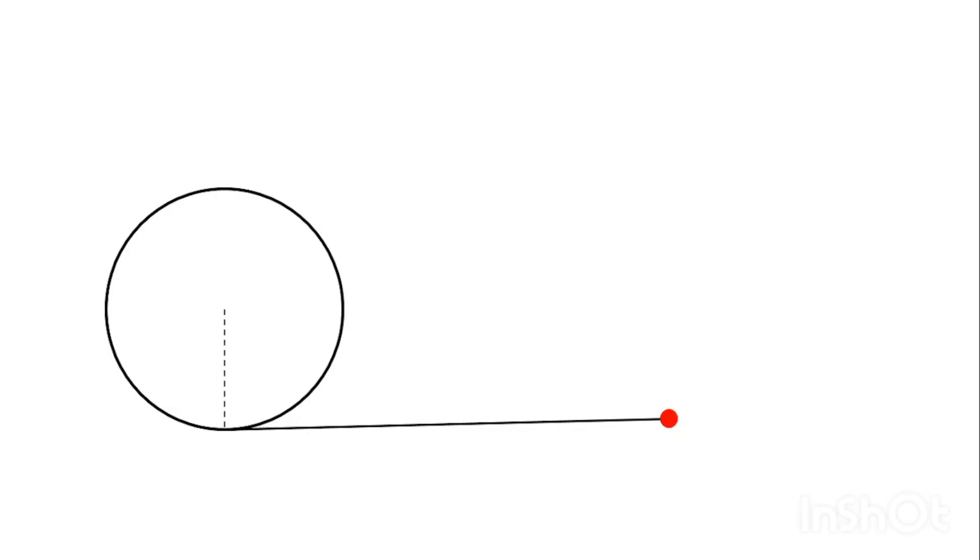And this is the initial radius to the tangent. So, let us call the center as O and this point of tangency as P at the initial point. Now, if the block is given velocity v like this, then what do you think will be the trajectory of the ball? It will be something like this. As the ball moves, the string goes on winding along the cylinder and its radius goes on decreasing. Finally, it hits the cylinder somewhere here.